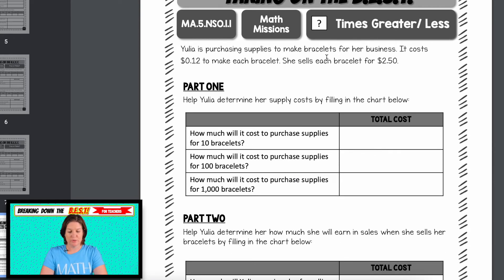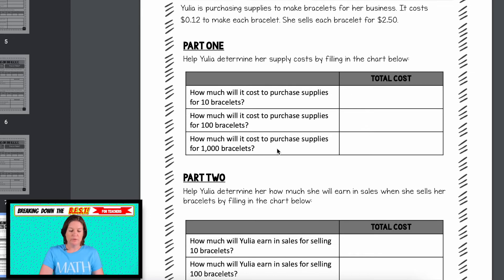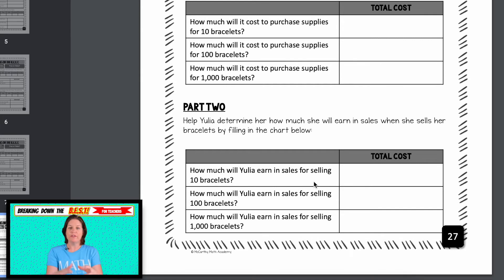And then here is the math mission. So similar to that one about the candy and it costing 18 cents, here's an example in the real world where Yulia is purchasing supplies to make bracelets for her business. It costs 12 cents to make each bracelet. She sells each bracelet for $2.50. So here we're helping Yulia to fill out this whole thing and we're taking all the knowledge that we've learned from the standard and placing it into a math mission. Also you can think of it like a math task. So you have that ready for you to use.